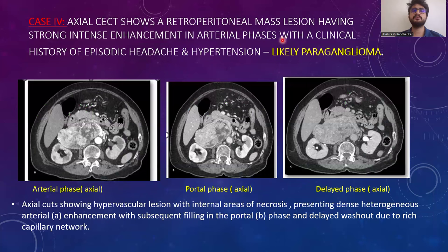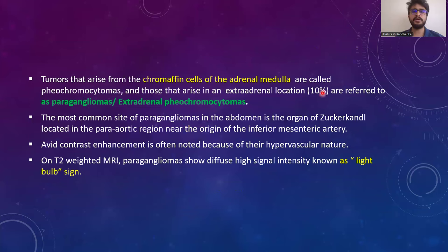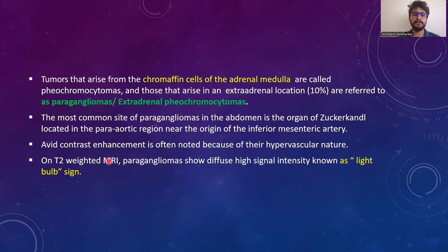Case 4: Axial CCT shows a retroperitoneal mass lesion with strong intense enhancement in arterial phases, with a clinical history of episodic headache and hypertension — likely a case of paraganglioma. The hypervascular lesion has internal areas of necrosis, showing dense heterogeneous arterial enhancement with subsequent filling in the portal phase and delayed washout. Tumors arising from chromaffin cells of the adrenal medulla are called pheochromocytomas, while those in extra-adrenal locations are paragangliomas. The most common abdominal site is the organ of Zuckerkandl, near the origin of the inferior mesenteric artery. On T2-weighted MRI, paragangliomas show diffuse high signal intensity known as the light bulb sign.